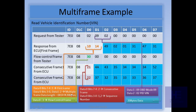So we are receiving 20 bytes of data from the ECU. When we read a Vehicle Identification Number, we get 20 bytes of data from the ECU.